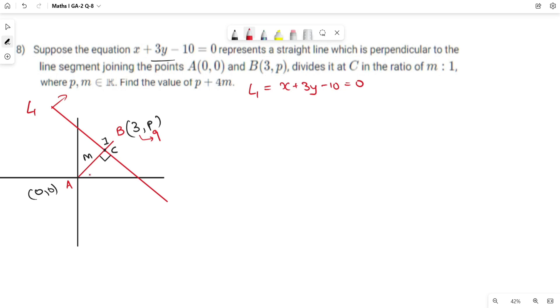Perpendicular to AB, which joins points A(0,0) and B(3,p), divides at C in the ratio m:1. Find the value of p plus 4m.